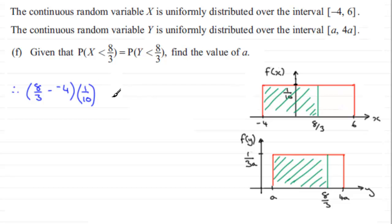And that must equal this area here, which is the difference between 8 thirds and A. So we've got 8 thirds minus A. That will give us the length across the bottom. Multiply by the height here, which is 1 over 3A.